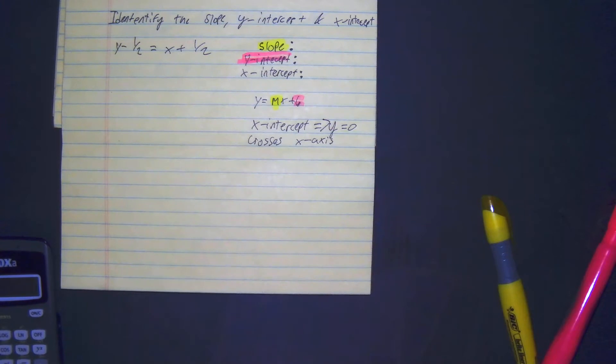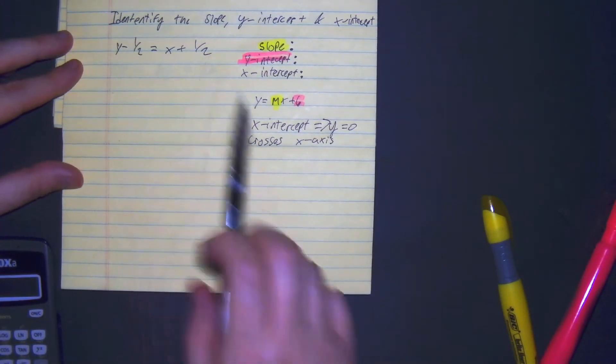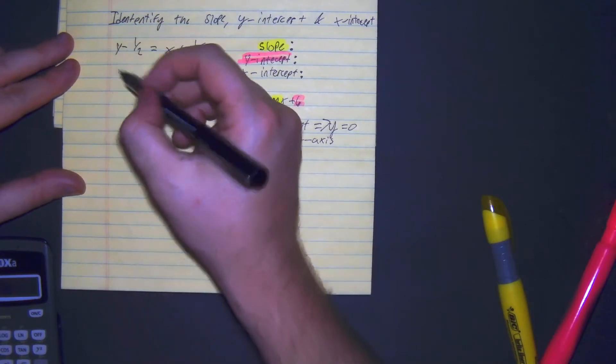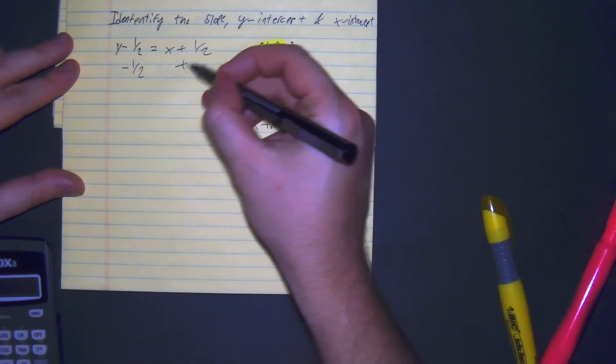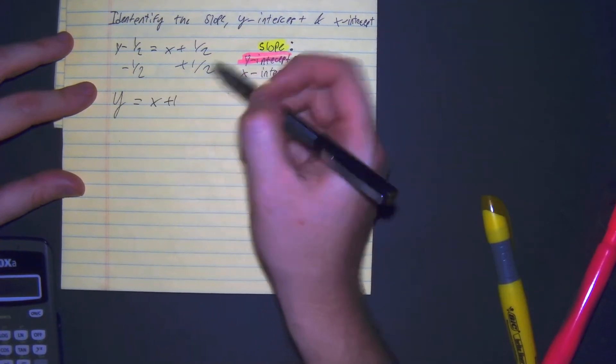But first, let's put it in slope-intercept form so we can do that. So we have y minus half equals x plus half. Goal is to isolate y to get it there, so we add half to both sides. We get y is equal to x plus 1.